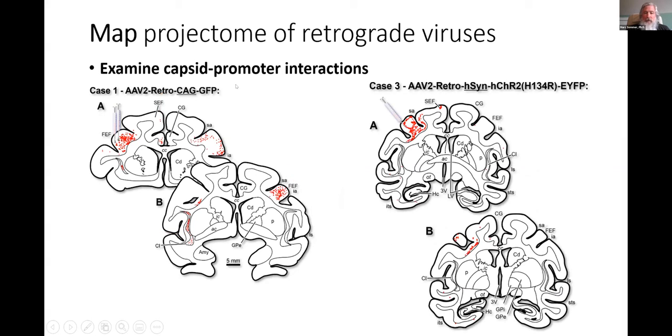There's also this capsid promoter interaction. We do the same experiment basically, but using hSyn instead of CAG as the promoter, we get different results. We still get projection neuron labeling in the supplementary eye field, we get nothing in the contralateral frontal eye field, and nothing in the claustrum.